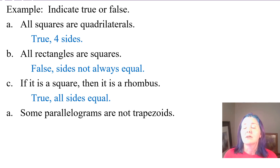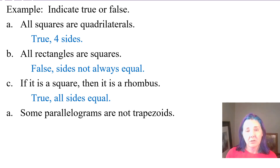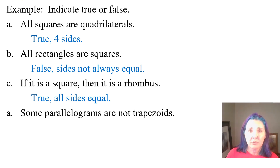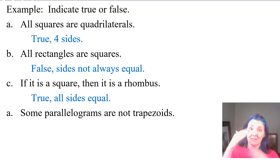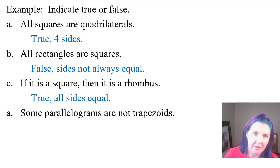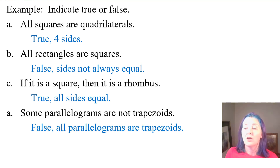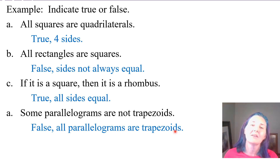How about this one: some parallelograms are not trapezoids. Well, what we're saying here is you can envision a parallelogram that doesn't have the characteristics of a trapezoid. So what are the characteristics of a trapezoid? A trapezoid has four sides and at least one pair of the sides is parallel. Does a parallelogram meet that definition? Definitely — it has four sides and not one but two pairs of parallel sides. If it only had one, it would still be a trapezoid, and it's okay if it has an extra pair. So some parallelograms are not trapezoids would be false. They all are — all parallelograms are trapezoids. I hope you found this video helpful. If you did, please give it a thumbs up. That helps other students find the video.